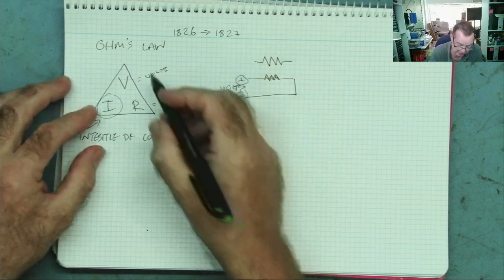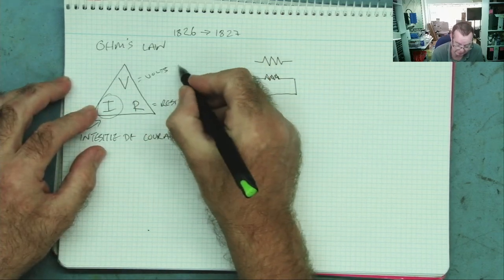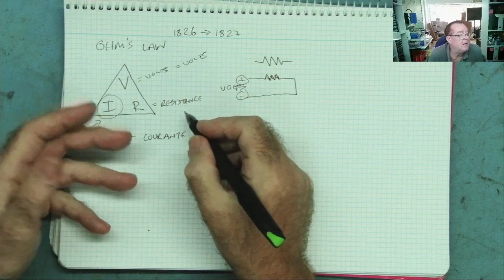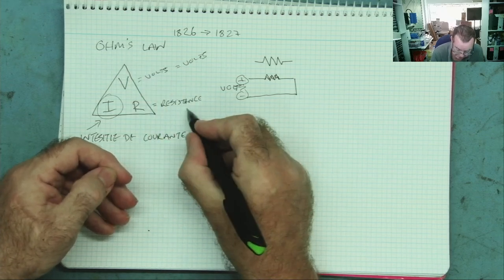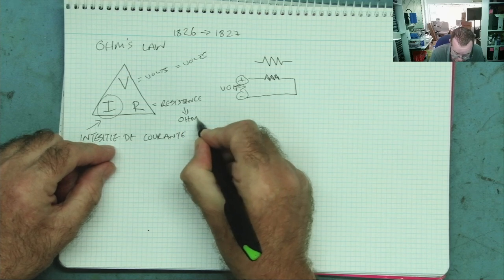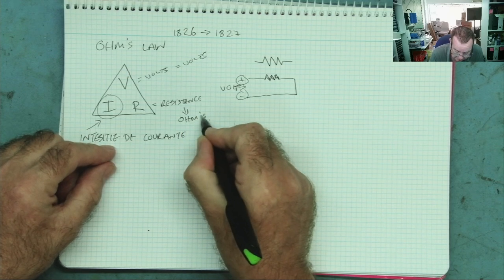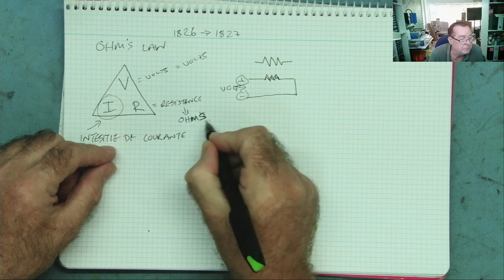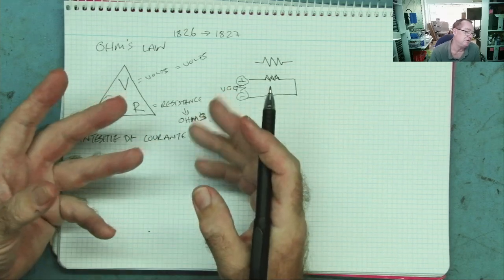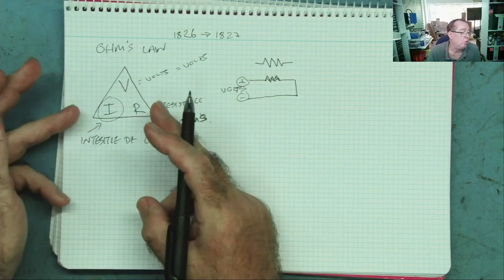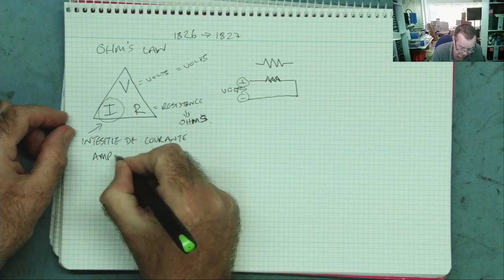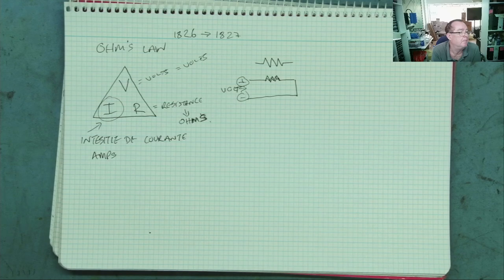These three things have units of measurement. Volts is measured in volts — easy. Resistance is measured in ohms. Ohm thought the best thing to call the unit was his own name — and why not, since he did discover the principle. The more ohms, the more resistant a material is. Current is named after another physicist, Ampere, and is measured in amps.